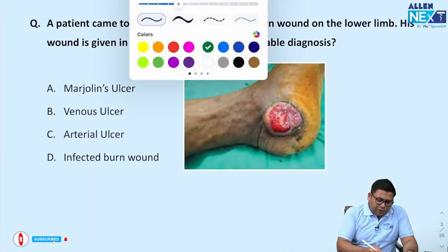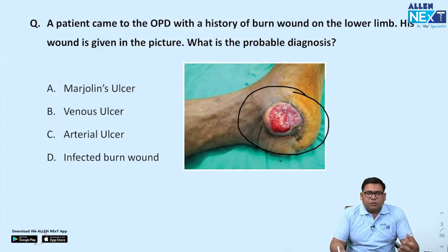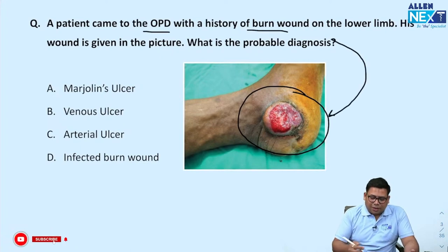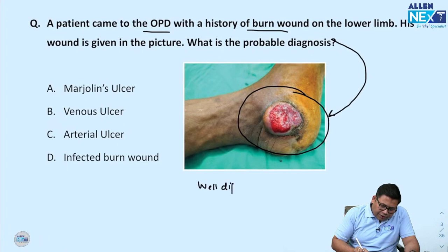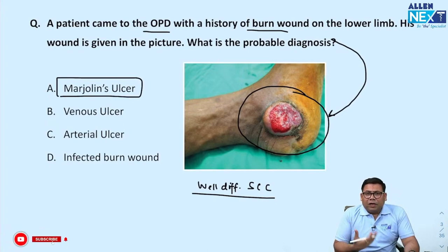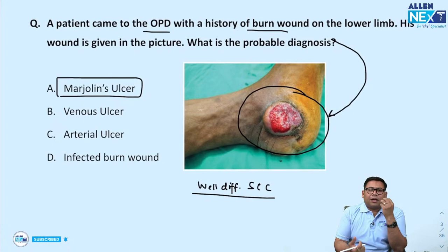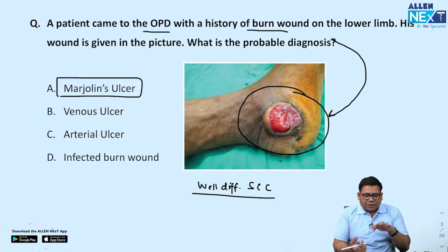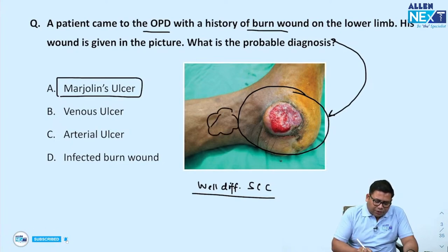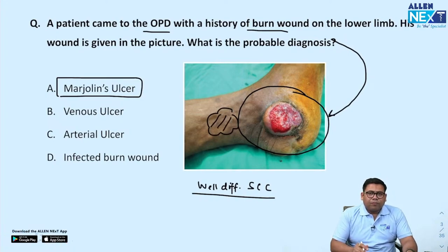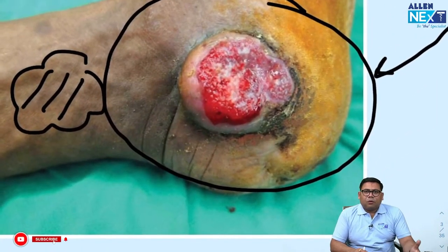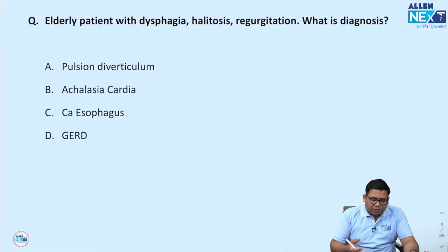Next is a very easy question. Near the medial malleolus you have an ulcerative growth. Patient came with a history of burn and such an image. The answer is well-differentiated SCC, also known as Marjolin's ulcer — a well-differentiated SCC arising from a long-standing venous ulcer or a burn wound. It could not be just a venous ulcer because the location for that would be the gaiter zone. This is a classical Marjolin's ulcer. An infected burn wound would not look like this growth.